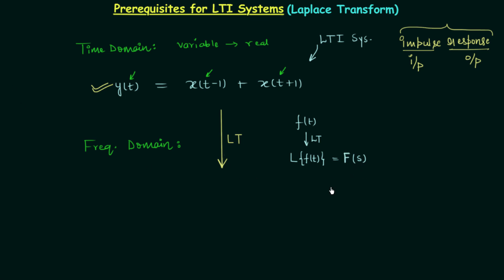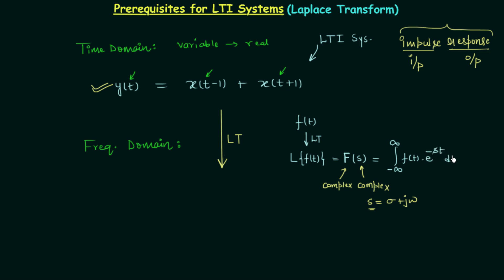In the Laplace transform, S is a complex variable — it is not real. S = σ + jω, so the function F(S) is also complex. The formula is: F(S) = integration from minus infinity to infinity of f(t) multiplied by e raised to power minus St, dt. For example, if your function f(t) = 2, a constant (DC value), you are interested in finding its Laplace transform. Simply use the formula: integration from minus infinity to infinity of 2 multiplied by e raised to power minus St, dt.